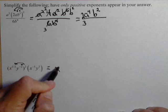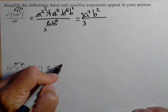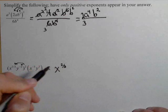That gives us x to the one-third squared. That's when the exponents multiply, so two-thirds.